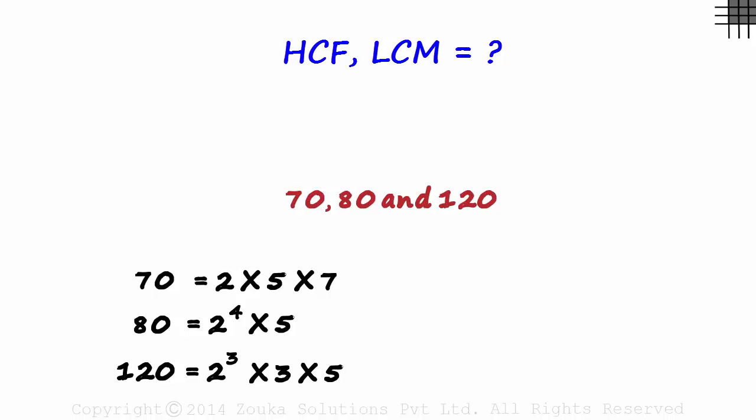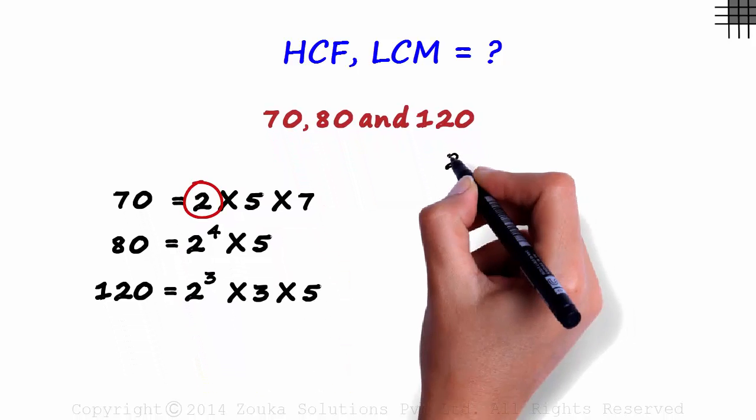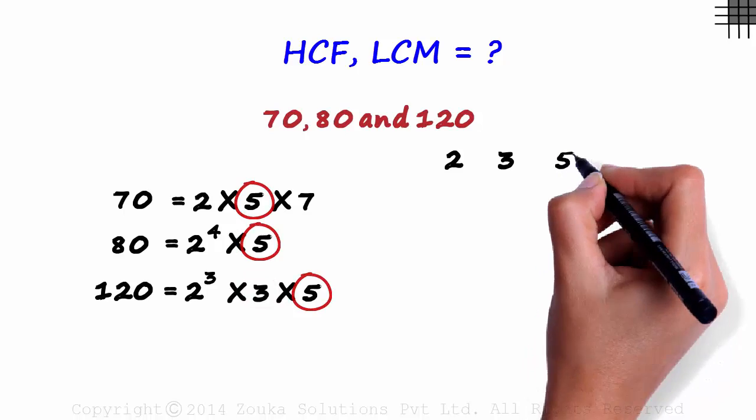What do we do now? To keep it simple, we can quickly make columns of the list of prime factors. We have 2, 3, 5 and 7.